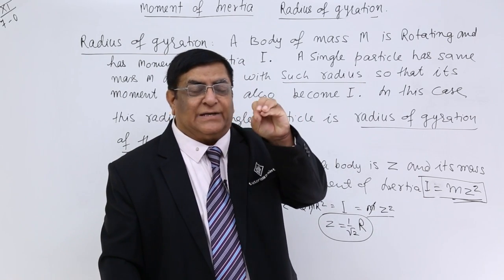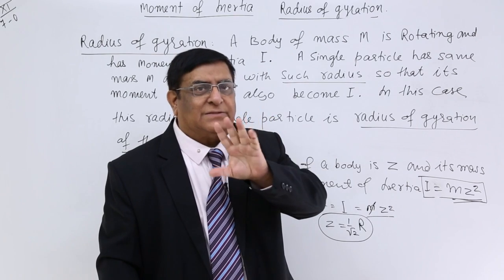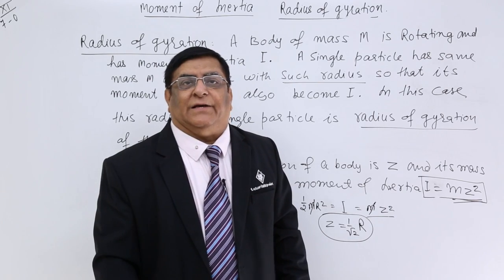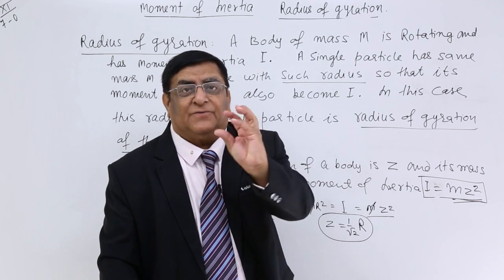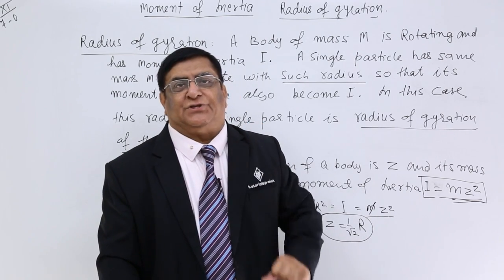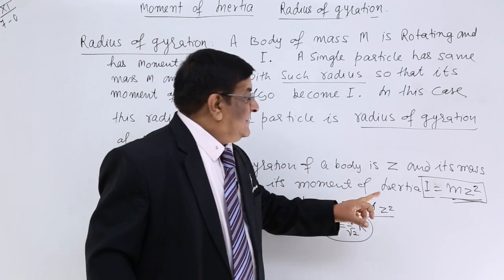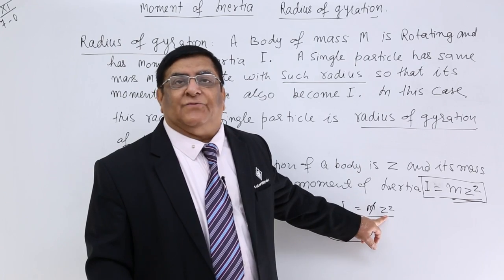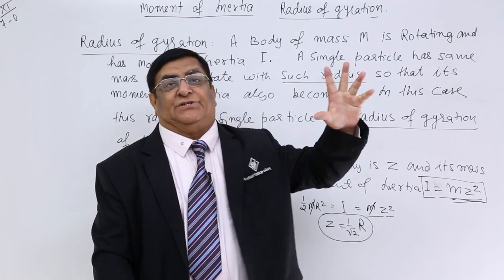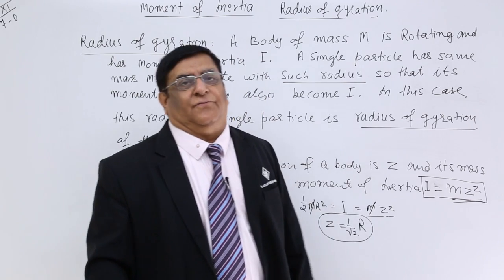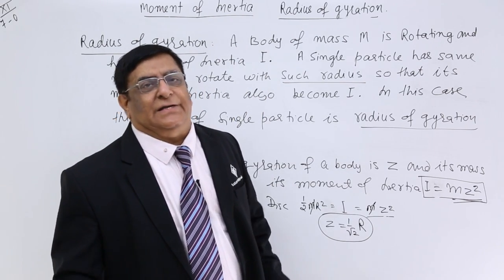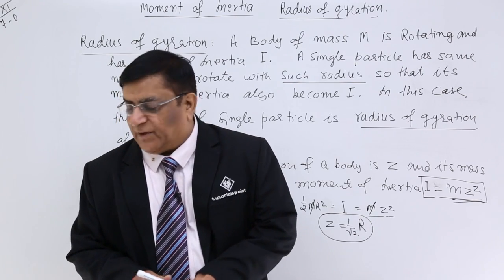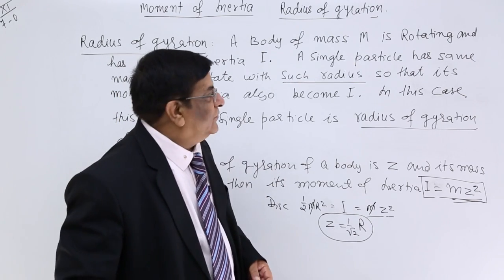The radius of gyration is equivalent to centre of mass: just as the complete mass is located at a point called centre of mass, the effect of rotation — the moment of inertia — is located for a single particle at distance z, giving us the effective radius of rotation.